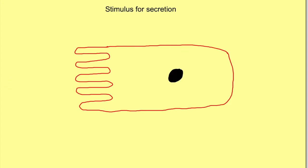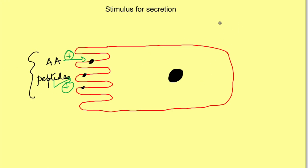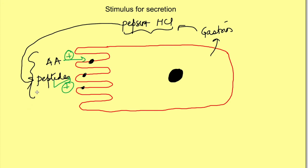Amino acids and peptides stimulate the secretion of gastrin from the G cells. Once you understand the function of gastrin, you'll realize why this is important: the G cell releases gastrin, which in turn causes the release of HCl and pepsin in the stomach — the substances important for digestion of peptides. So essentially, food itself is causing its own digestion by stimulating the release of the hormone.